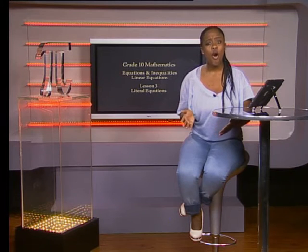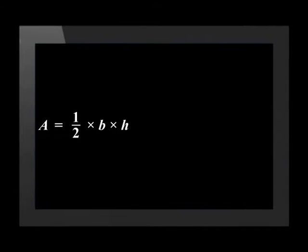Hello everyone. In this lesson we'll focus on literal equations. These are equations with variables or unknowns on both sides of the equality sign. Any formula is a literal equation. For example, the area of a triangle equals half the base times the height is a literal equation. Solving a literal equation is also called changing the subject of the formula. I'm going to hand over to Amashni to show you how it's done.